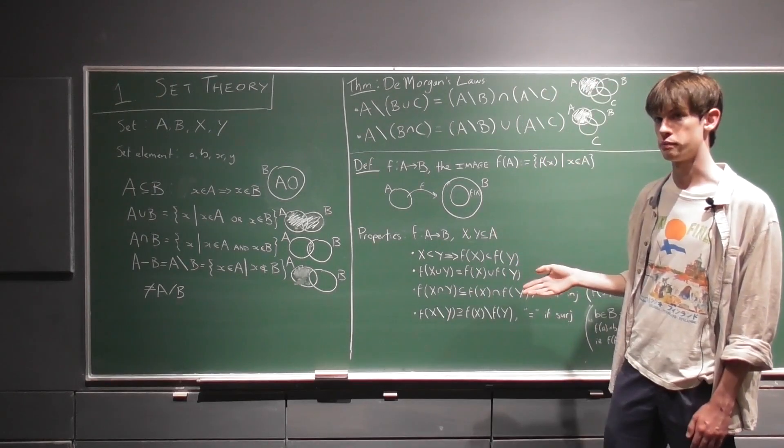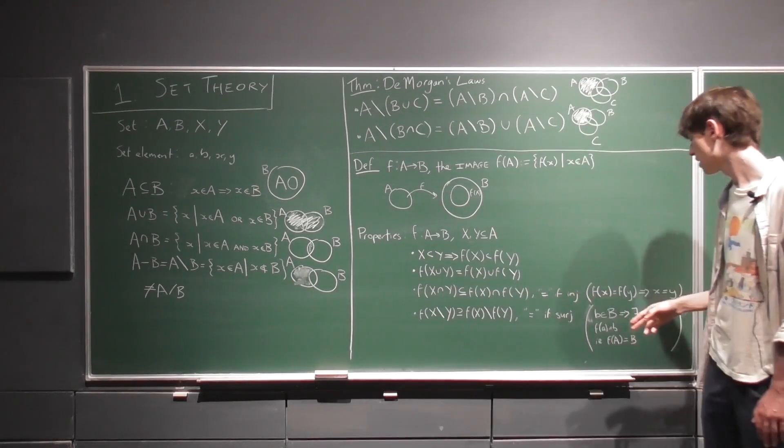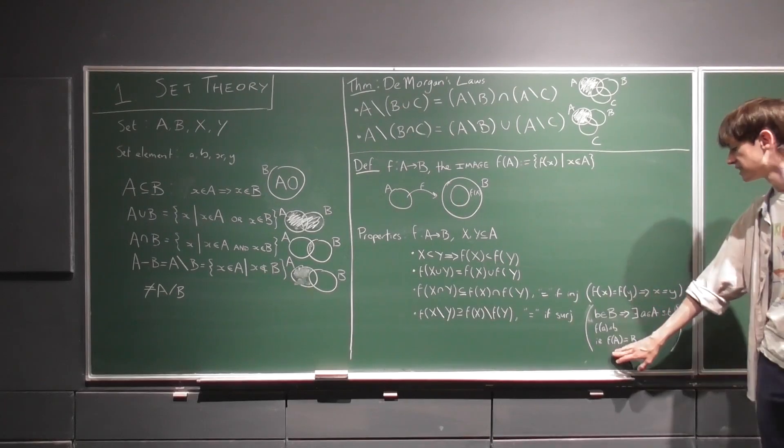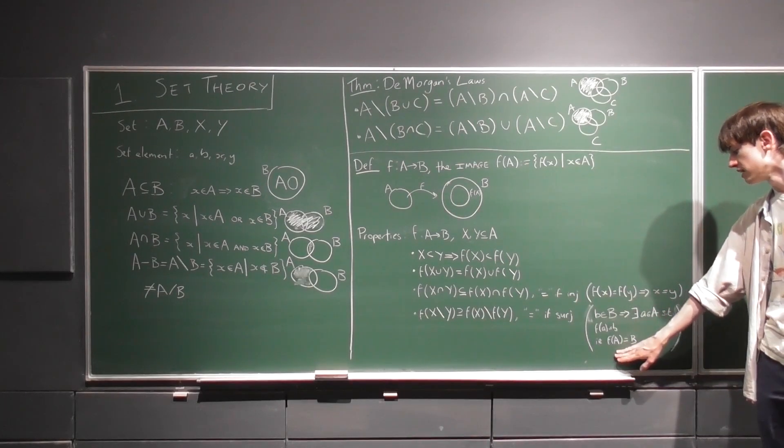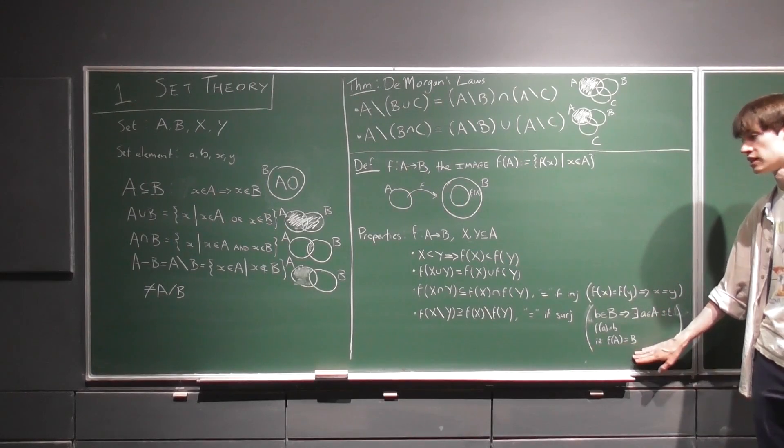So again, x squared would not be surjective. In this case, f of a equals b, so the image does equal the codomain.